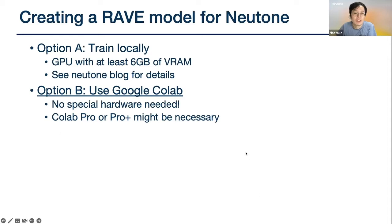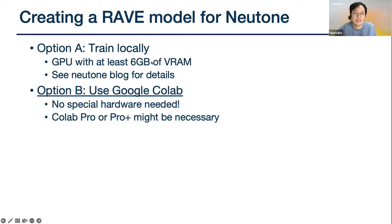For creating a RAVE model for a new timbre, the first option is to train locally. You'd need at least six gigabytes of VRAM with a GPU — most new NVIDIA GPUs are fine. Another option is to use Google Colab, where you don't need any hardware. However, since Colab has some restrictions, if you want to train multiple models in a month you might need to upgrade to Colab Pro or ProPlus.